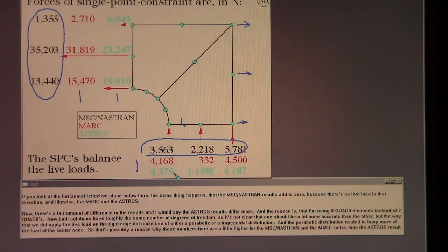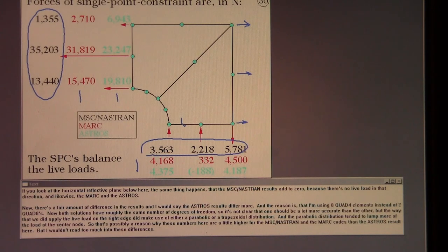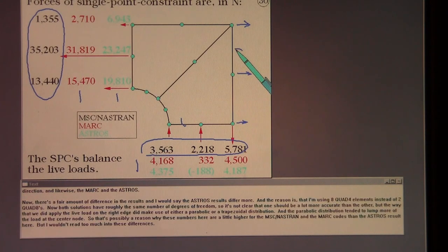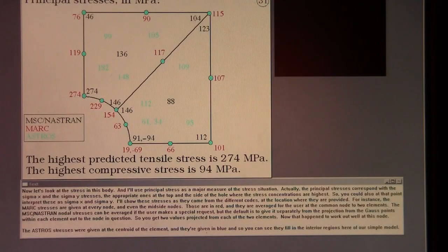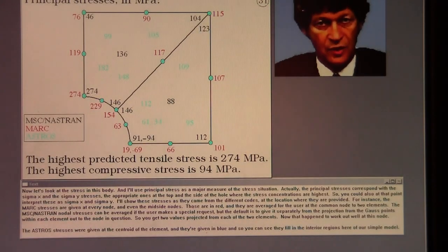Now there's a fair amount of difference in the results. And I would say the Astros results differ more. And the reason is that I'm using eight quad four elements instead of two quad eights. Now both solutions have roughly the same number of degrees of freedom. So it's not clear that one should be a lot more accurate than the other. But the way that we did apply the live load on the right edge did make use of either a parabolic or a trapezoidal distribution. And the parabolic distribution tended to lump more of the load at the center node. So that's possibly a reason why these numbers here are a little higher for the Nastran and the MARC codes than the Astros result here. But I wouldn't read too much into these differences.